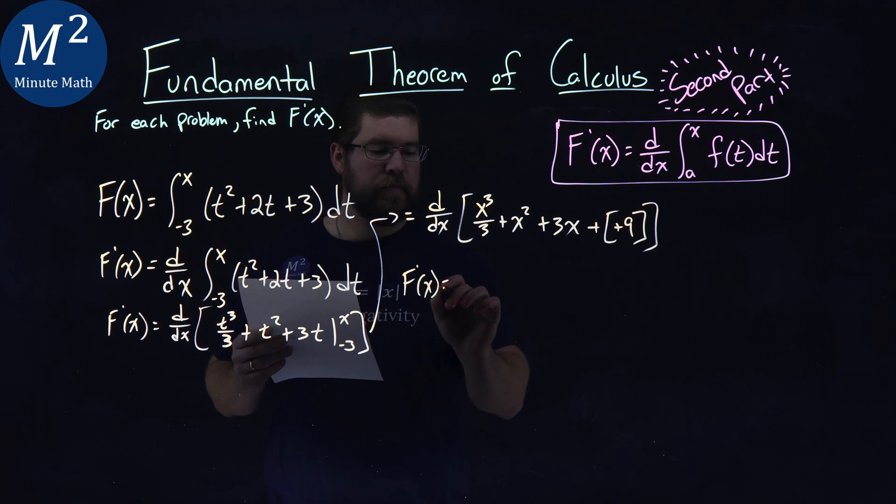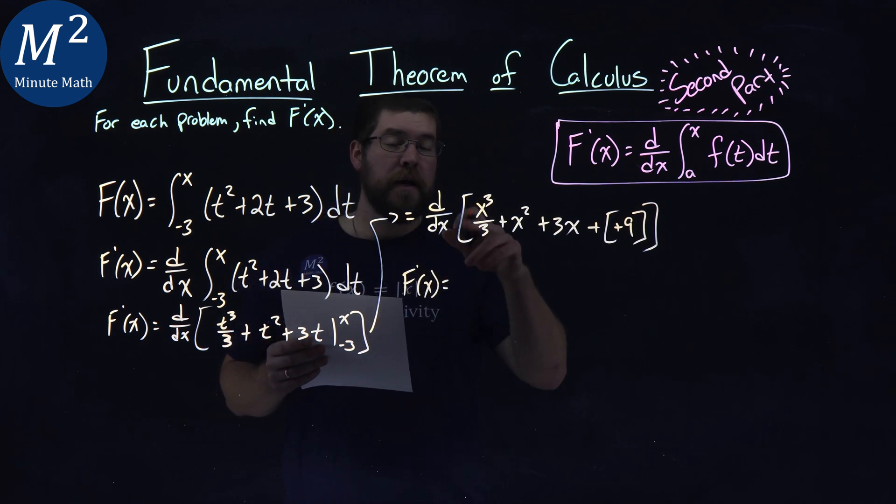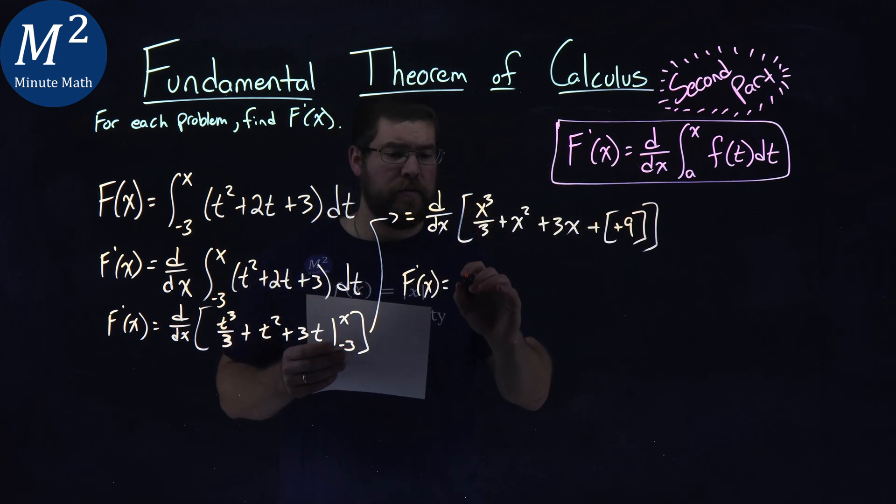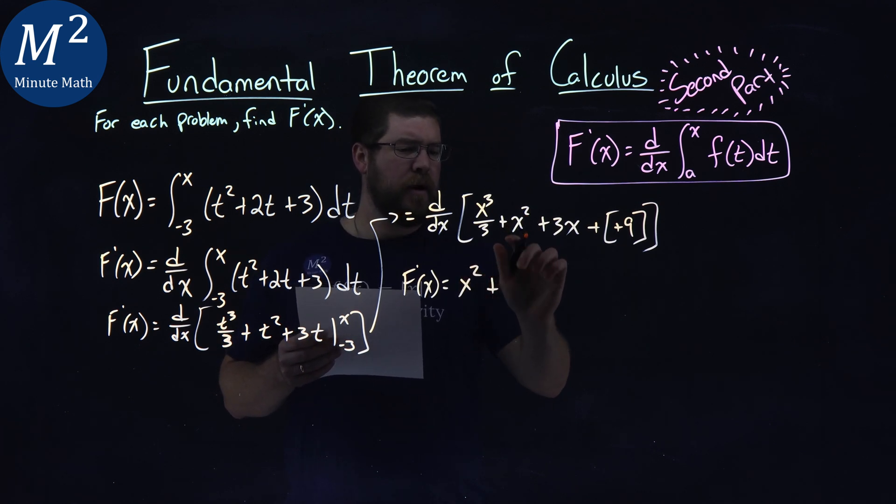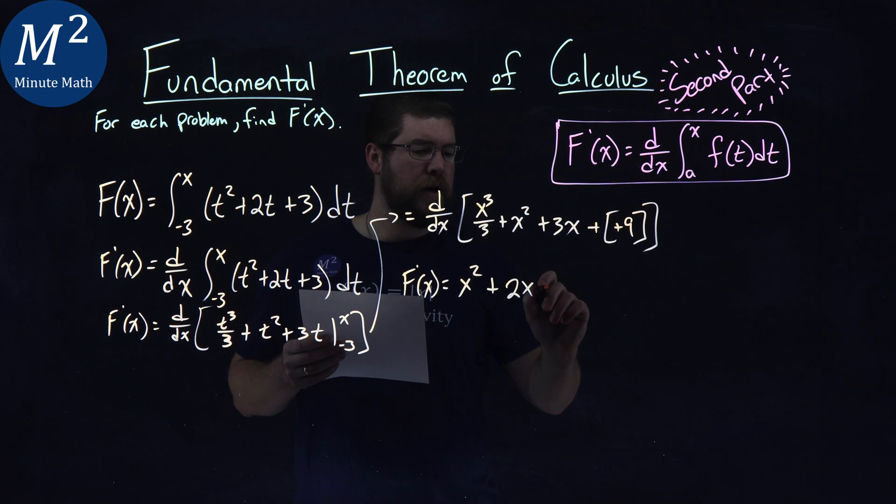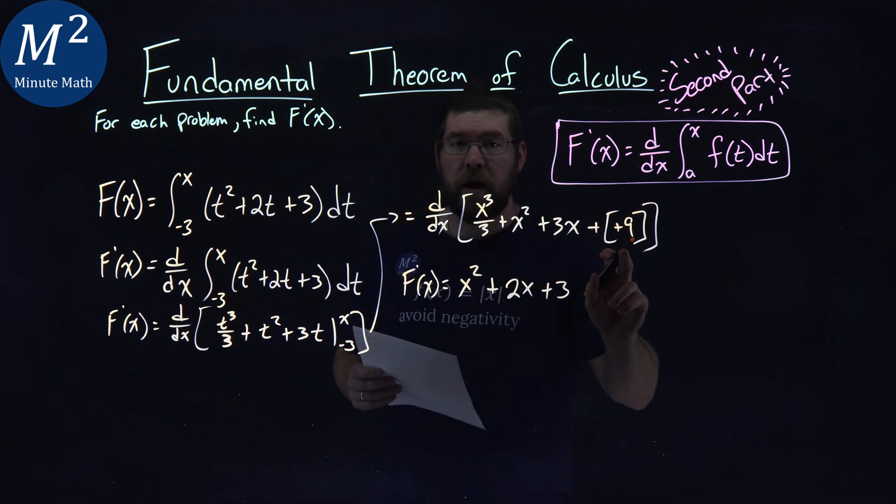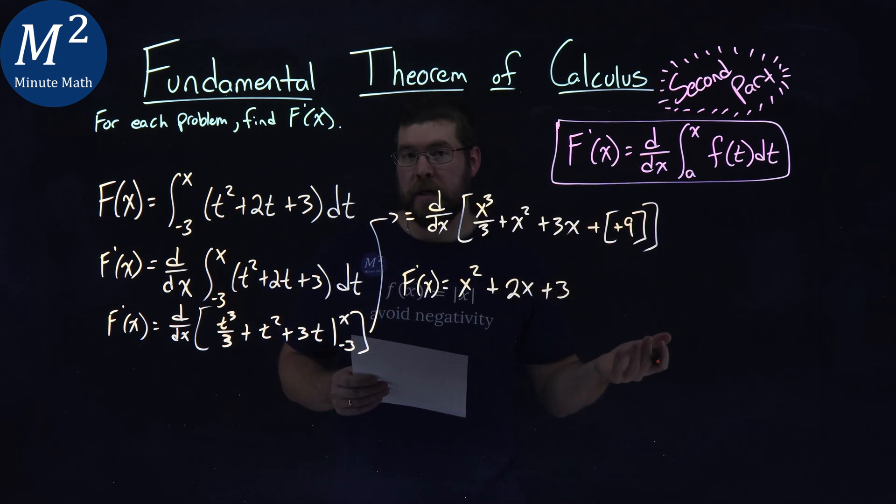We have f prime of x equals, when we take the derivative, x to the third over 3 is just x squared. x squared becomes 2x, 3x becomes 3, and the derivative of the constant 9 is just 0, and we don't need to write it.